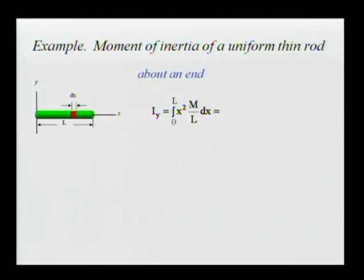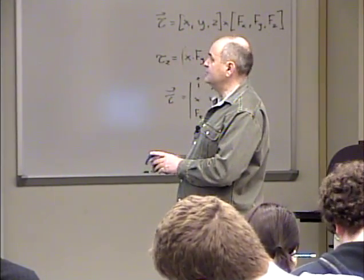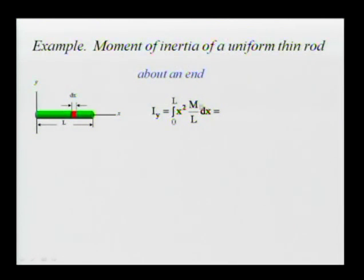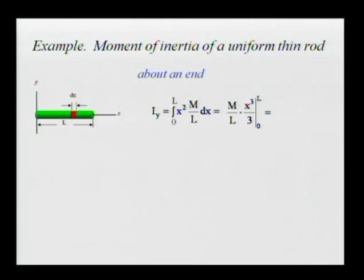The rest is mathematics. Using the first fundamental theorem of calculus — pull out constants: mass M and length L are constant. We have (M/L) times the integral of x-squared from zero to L. The indefinite integral of x-squared is x-cubed over three, so evaluated from zero to L we get (M/L)·(L³/3), which gives one-third M L-squared.